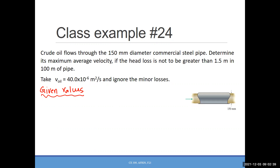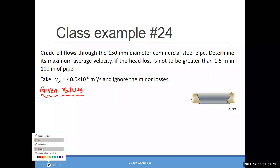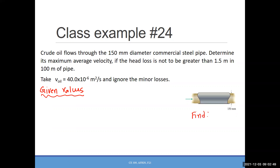Class example 24 — can you tell me, is it Type 2 or Type 3? From this table you can tell me what type of problem it is. It's Type 2 — we need to calculate the velocity. So that's what we will do.